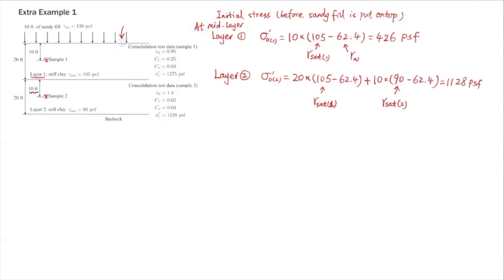That calculation gives σ₀₂' = 1128 PSF. The change in effective stress, Δσ', is the same for both layers, since it is due to the 10 feet of sandy fill placed on top. So Δσ' = 10 × γ_moist = 10 × 120 = 1200 PSF.